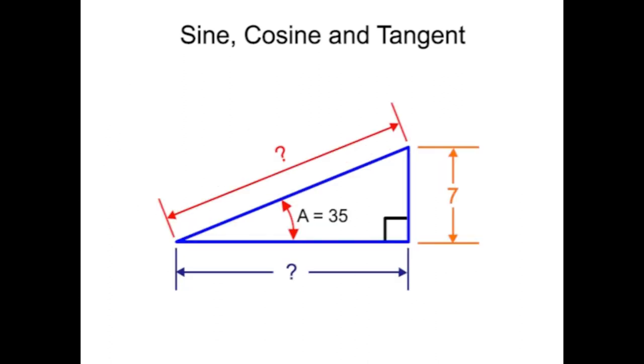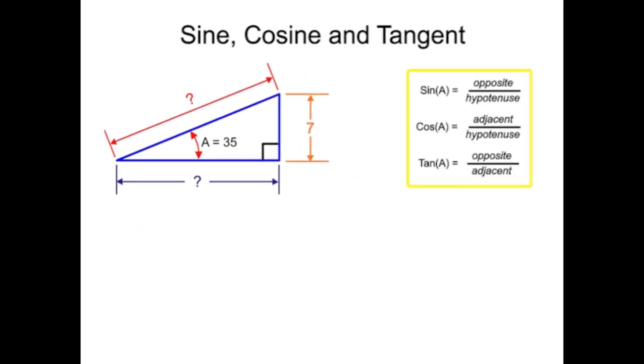If any one variable in the equation is unknown, we can use the sine, cosine, and tangent equations to solve for the missing value. For example, if we know that angle A is 35 and the opposite side is 7, we can solve for the hypotenuse using the sine equation.